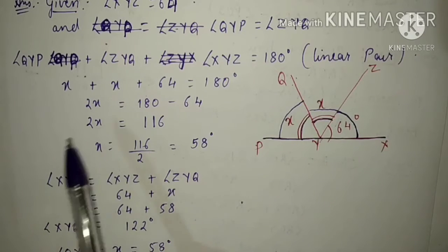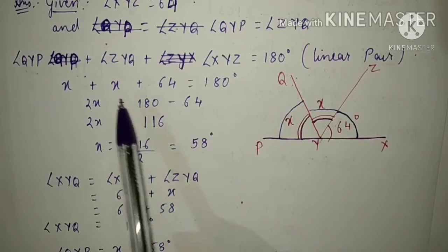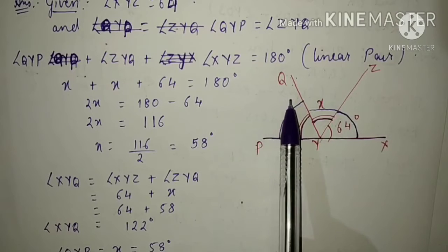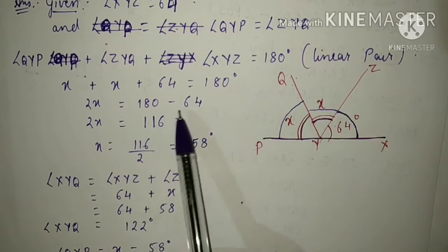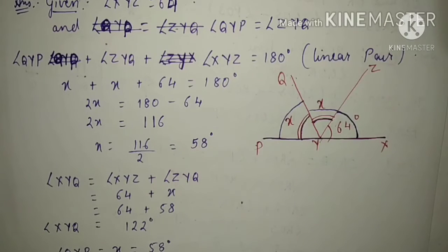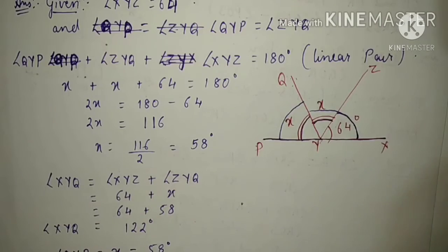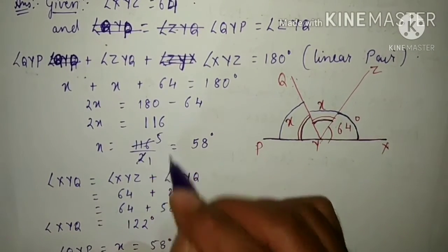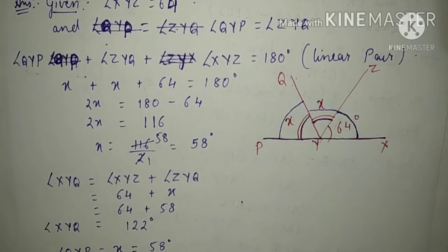x plus x is 2x, so 2x equals 180 minus 64. This 64 will be transposed and become minus 64. So 2x equals 116. Now x equals 116 divided by 2, so x is equals to 58 degrees.